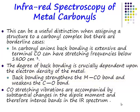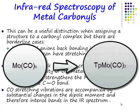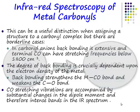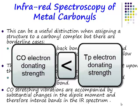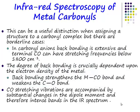What happens with a Tp* ligand? When you go from molybdenum hexacarbonyl to tris(pyrazolyl)borato molybdenum tricarbonyl, the stretching frequency of the CO decreases. It decreases because the Tp ligand is a better electron donor than a carbonyl ligand, and the species is negatively charged — although that negative charge is largely centred on the boron.